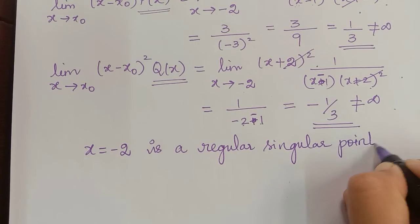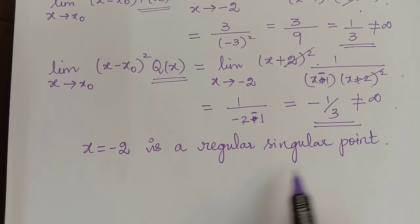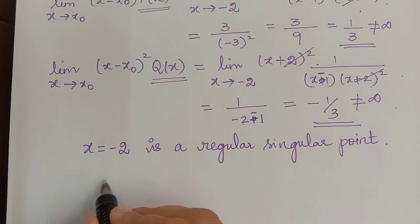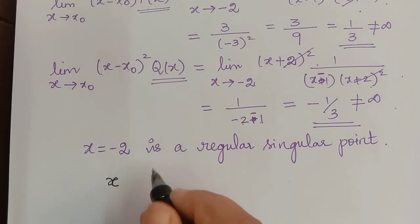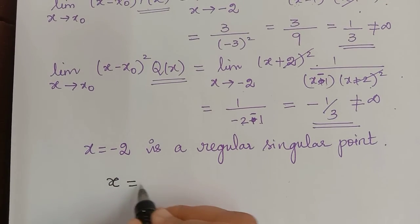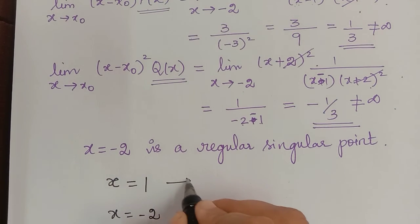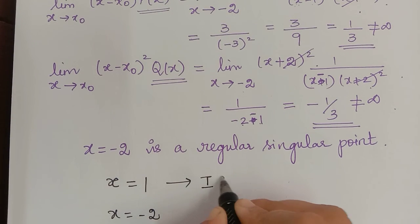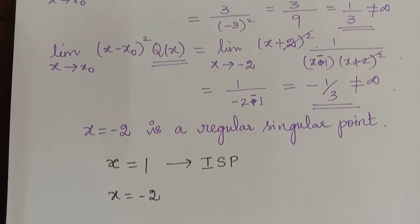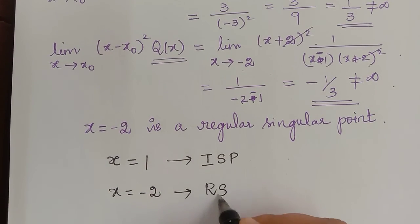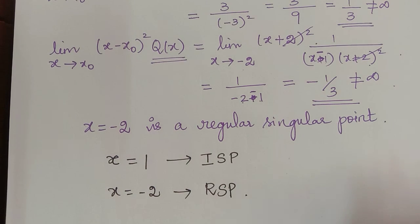So we have determined the nature of the singular points. To conclude: we had two singular points, x = 1 and x = -2, where x = 1 is an irregular singular point and x = -2 is a regular singular point. Hope you have understood this problem. Thank you.